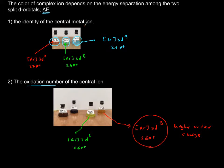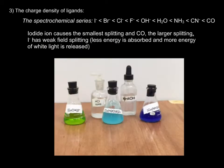So identity of the metal, the oxidation number of the central element, those are two. The last one is the most important. It's known as the spectrochemical series.